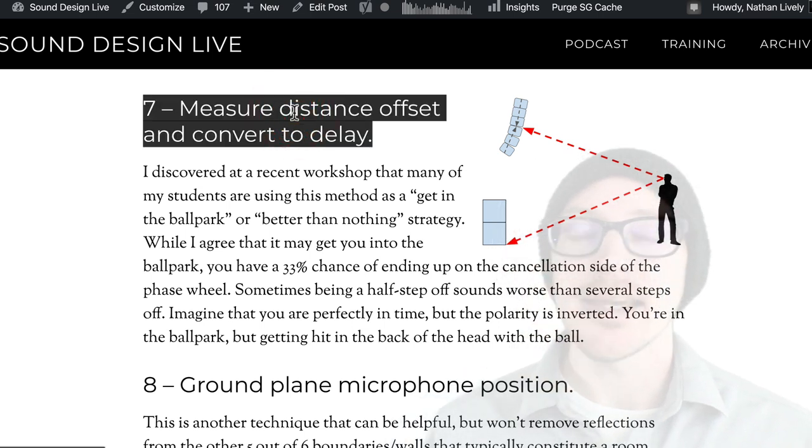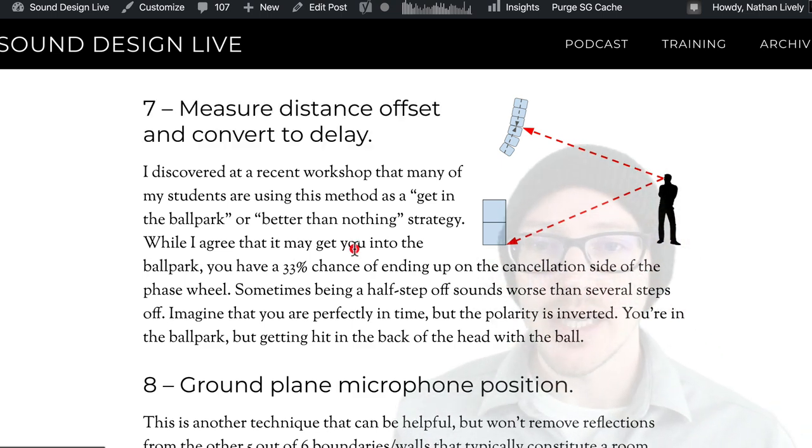This seems like such a great hack, and honestly, I guess it is. It's a good shortcut because 66% of the time you're going to be right. So if you want to roll the dice, 66% of the time you're going to get some amount of summation, and 33% of the time you're going to get some amount of cancellation. So I don't know, do you want to roll the dice? Well, let's look at how this might work out.